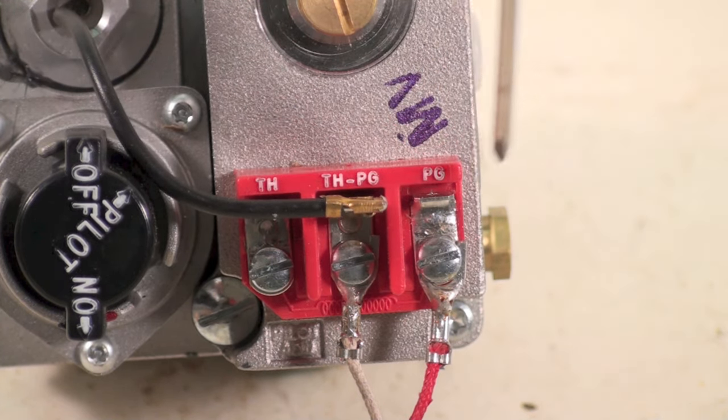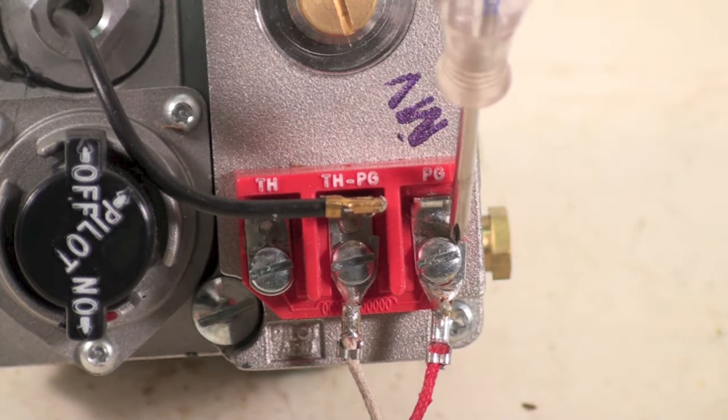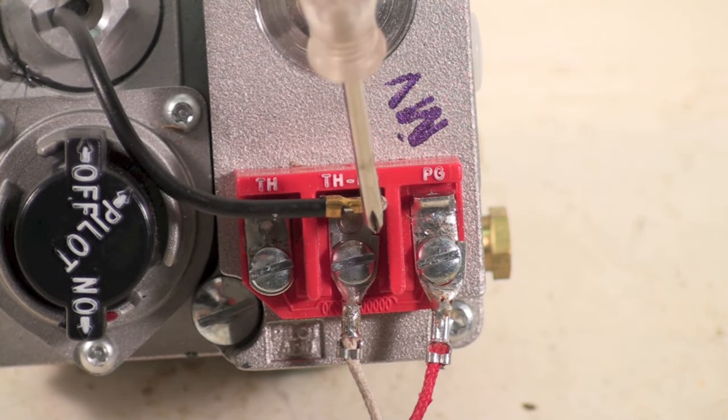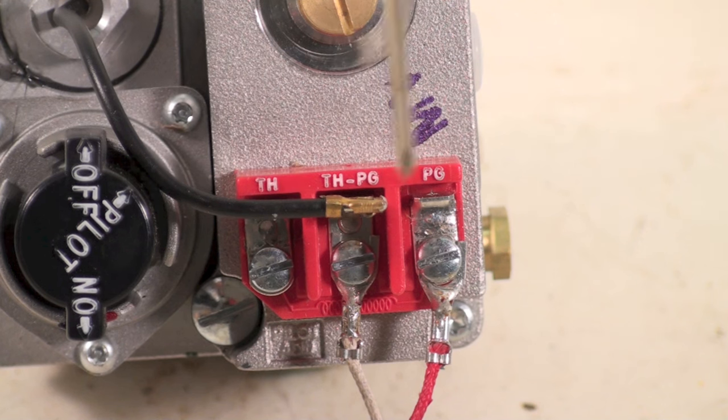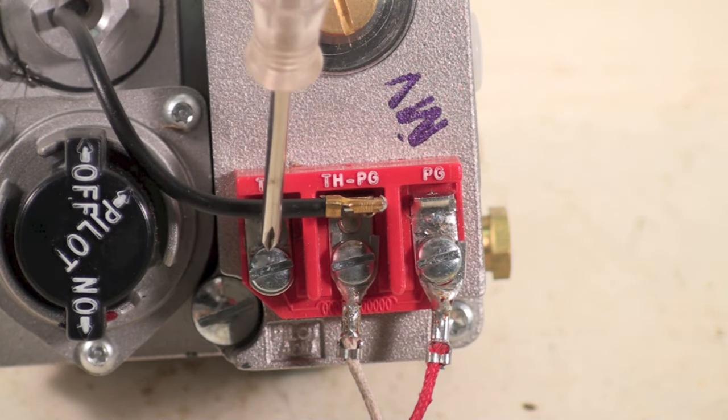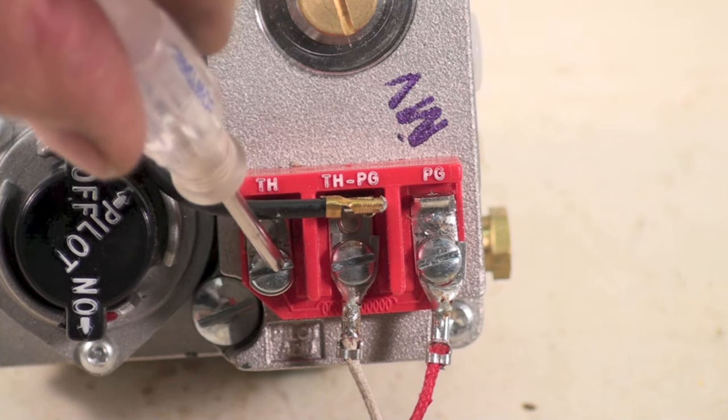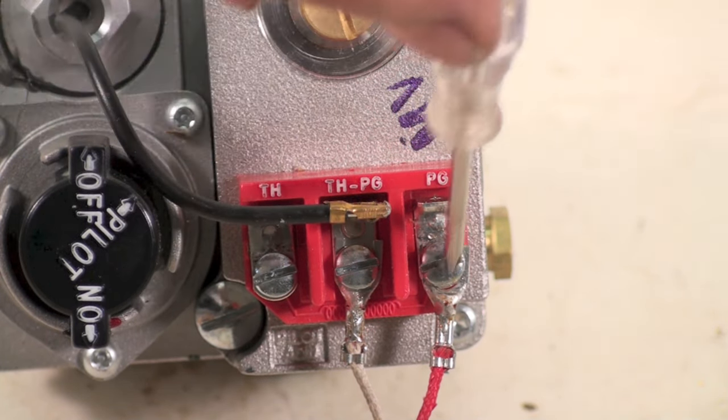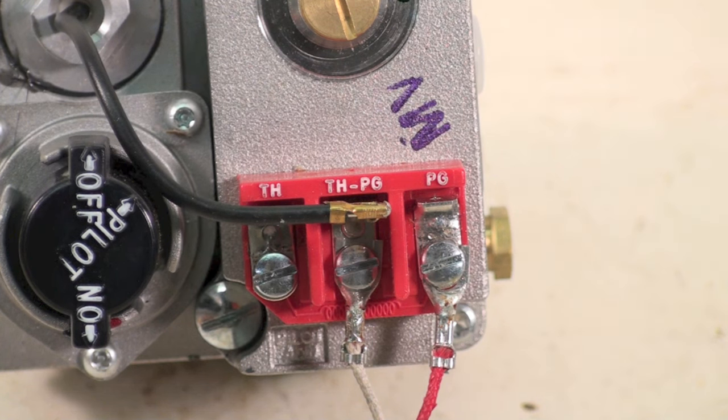But the power comes from here. This is your common side of the control. The thermal pile feeds in here, goes up to the thermostat, comes back down, and puts power here, which energizes the solenoid.